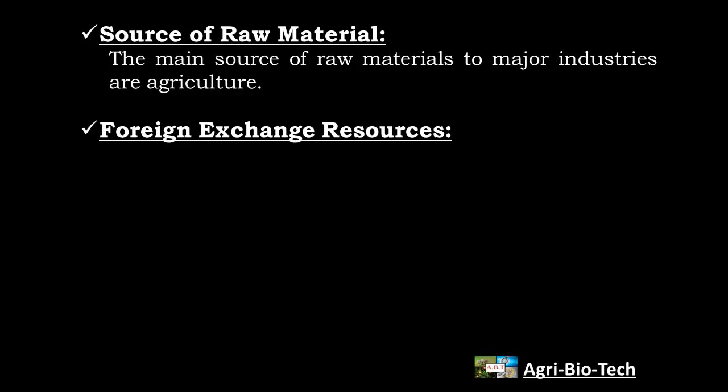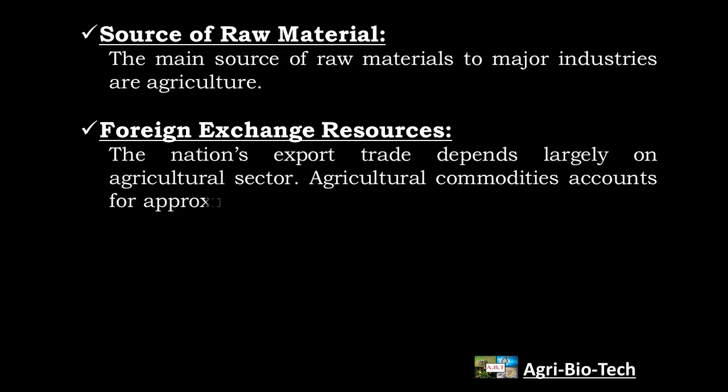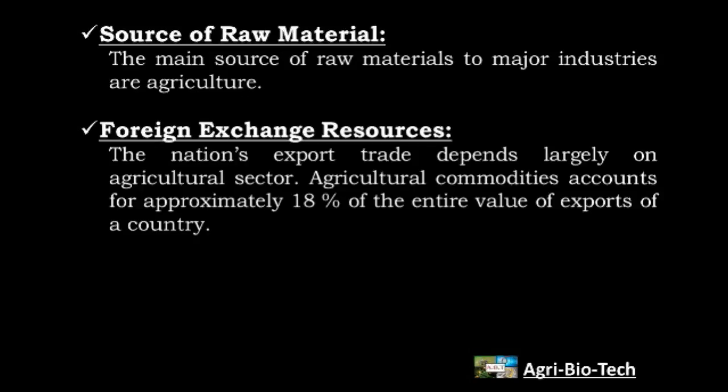Fourth one, source of raw material. The main source of raw material to major industries is agriculture, such as cotton and jute fabric, sugar, tobacco, edible as well as non-edible oils. Foreign exchange resources: the nation's export rate depends largely on the agricultural sector. Agricultural commodities account for approximately 18% of the entire value of exports of a country. So agriculture products are an important source of earning a country's foreign exchange.